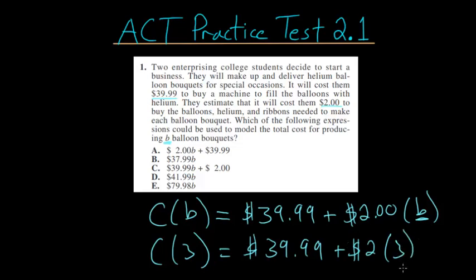which is six. So for three bouquets, we'd have to pay this $6 plus this fixed cost here. And the only equation up here that even has the correct fixed cost is this letter A. And you can see that it also has this $2 for B bouquets. So choice letter A will be our final answer.